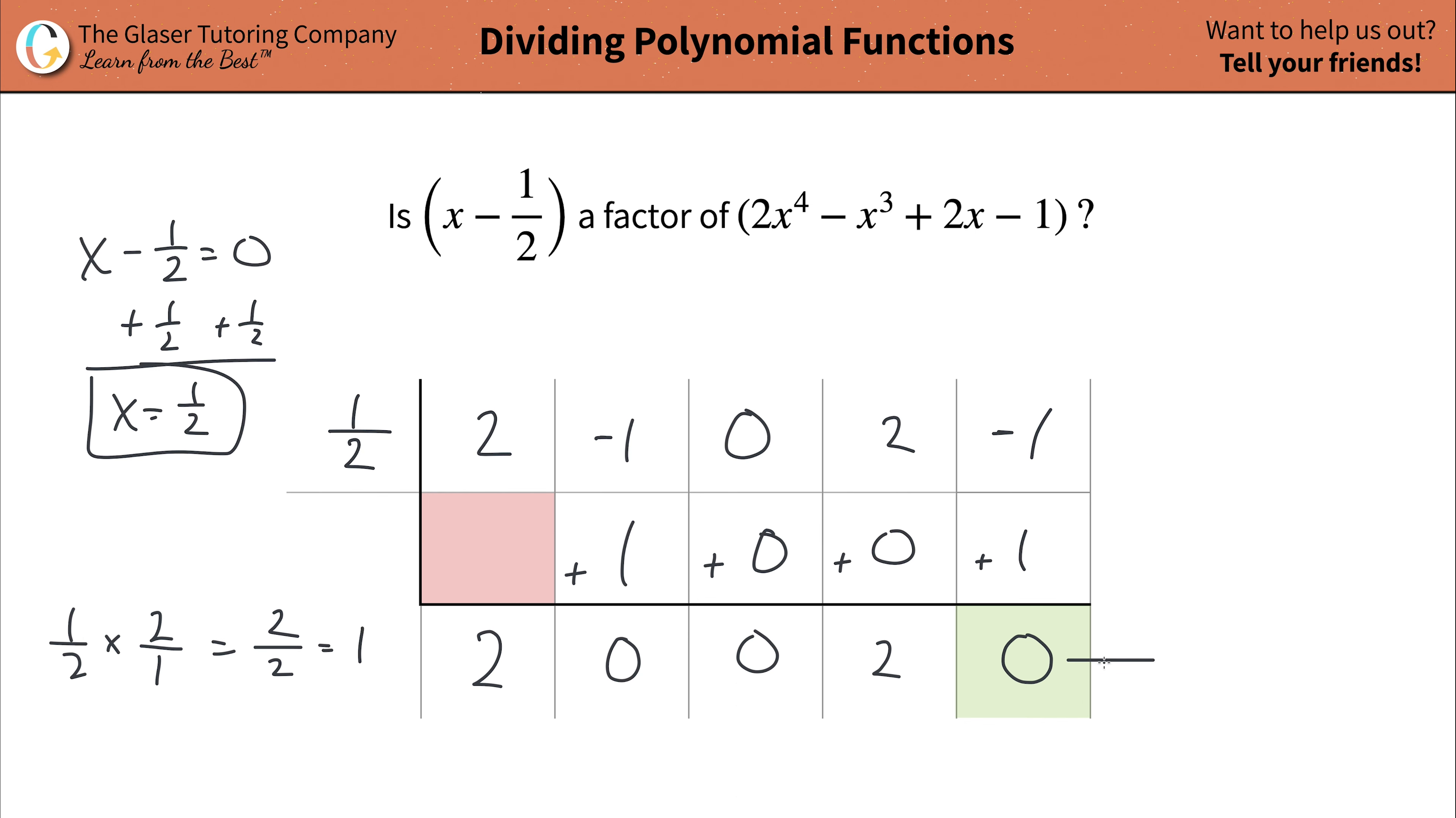Zero. Now the reason why this box is in green is because this box represents your remainder. If this is indeed zero, then what that means is that there is no remainder. So when you take this term and you divide it into that thing, you have no remainder. In other words, it divides evenly. In other words, it is indeed a factor.